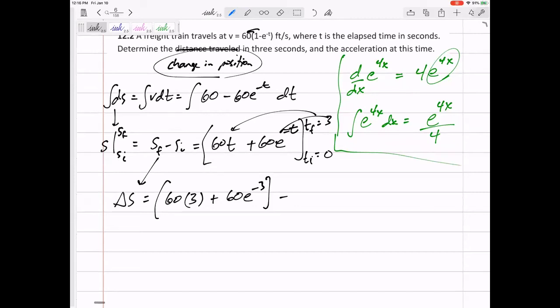60e to the negative 3 minus. Now, 9 times out of 10, I don't have to plug in that t equals 0. Because normally t equals 0. And when I plug in t equals 0 right here for 60t, yes, I get 0. But be very, very careful with these exponents.